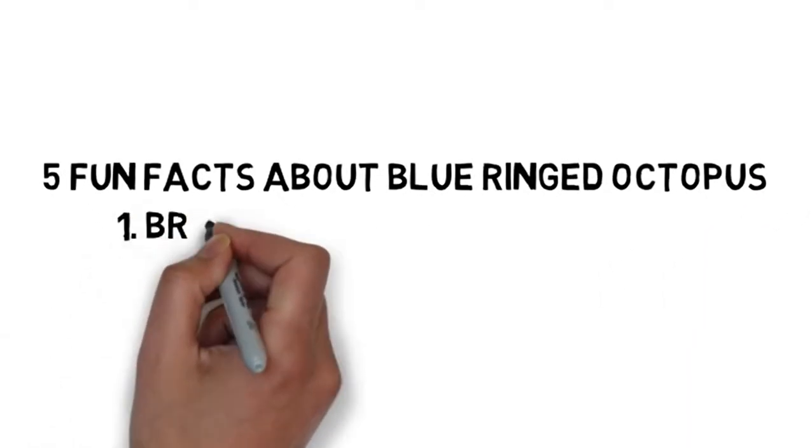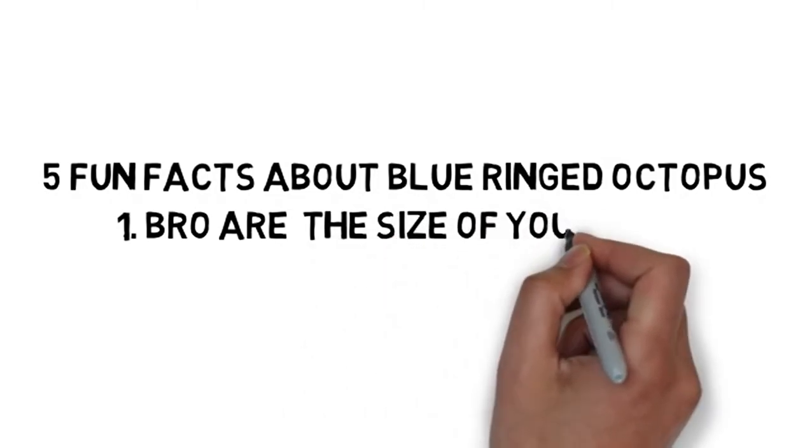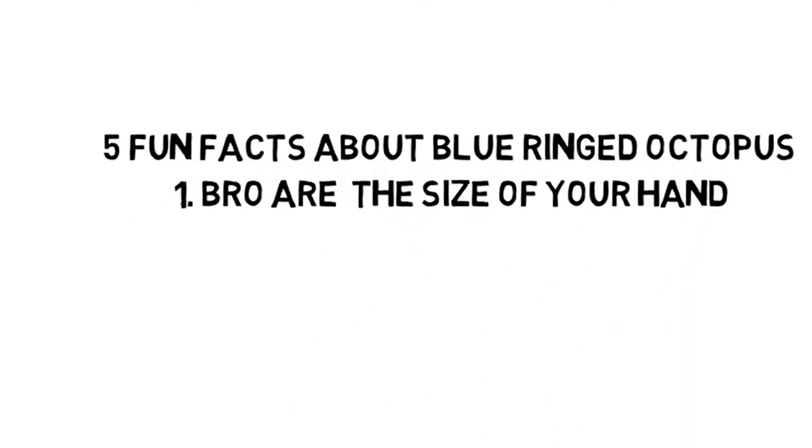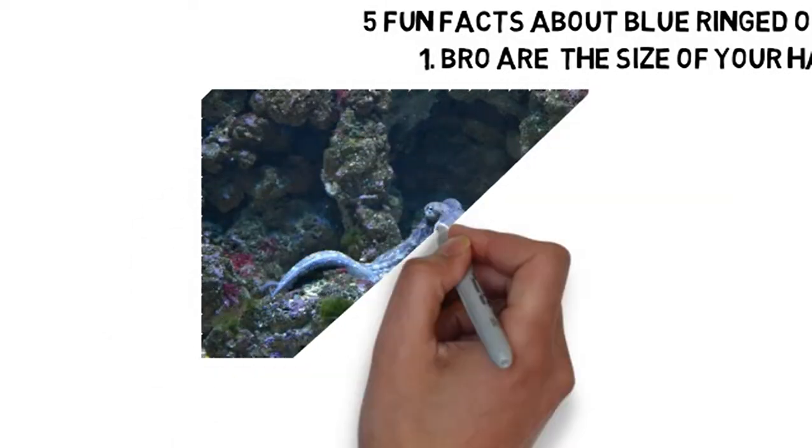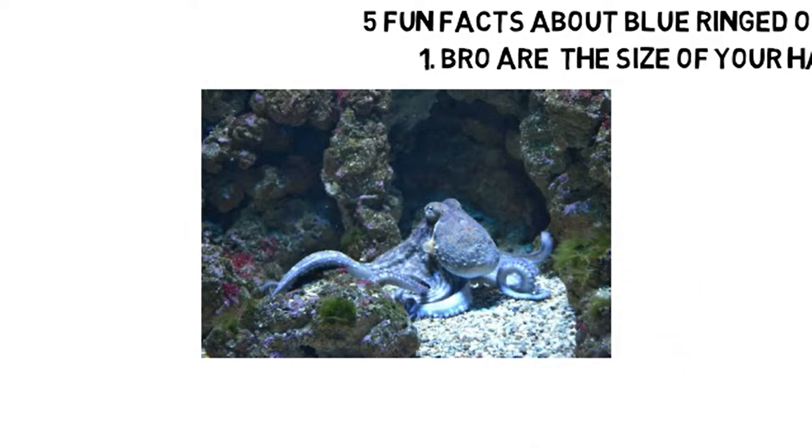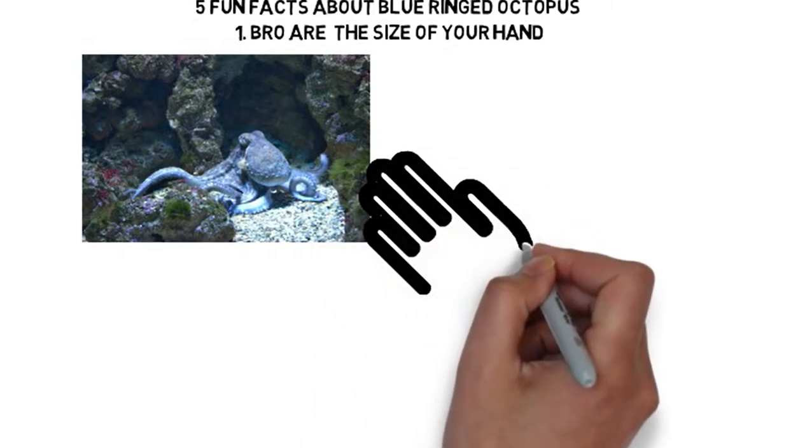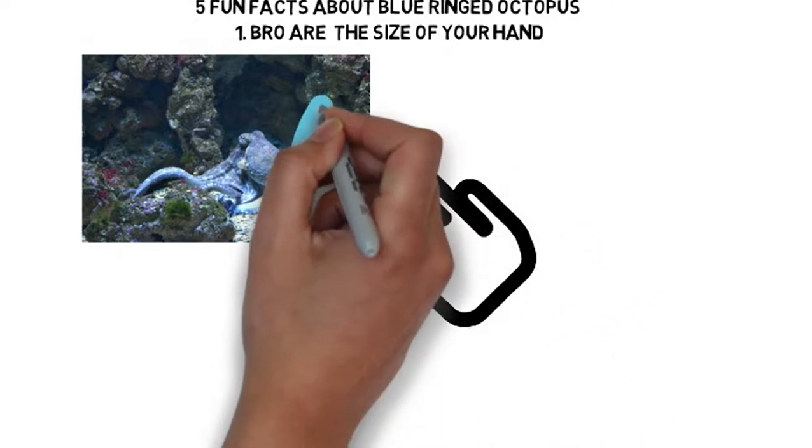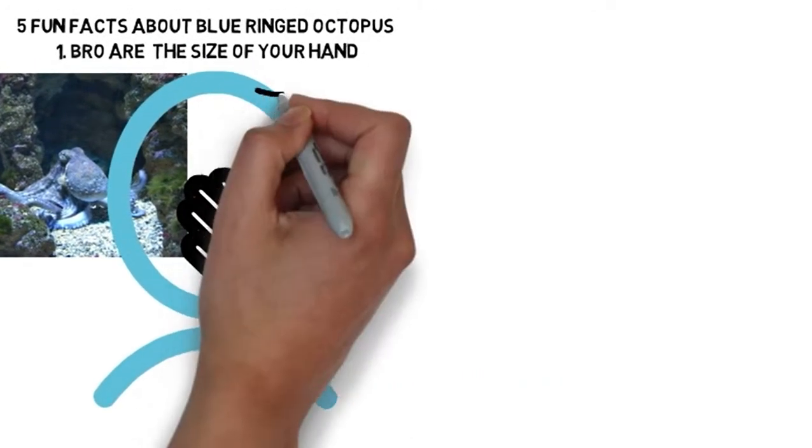The first fact is that blue ringed octopus are the size of around your hand. Considering how big normal octopuses are, blue ringed octopus aren't that big. They're just around the size of your hand and they aren't really that big or tiny either.